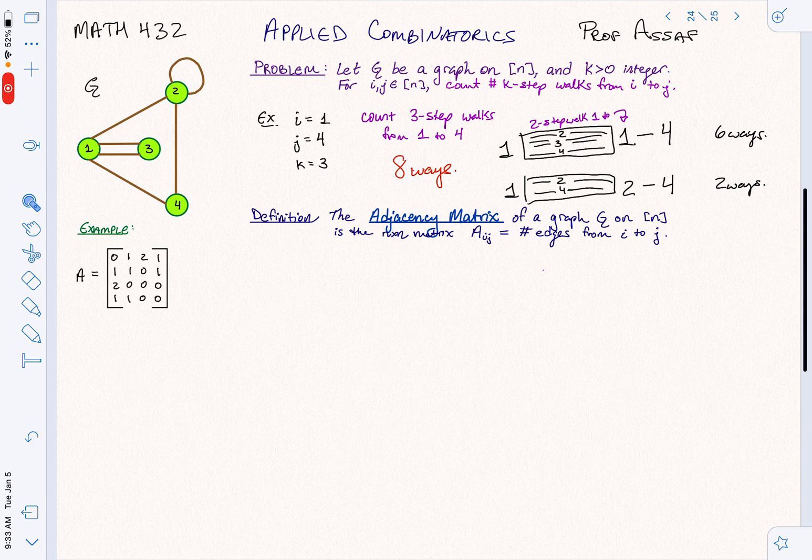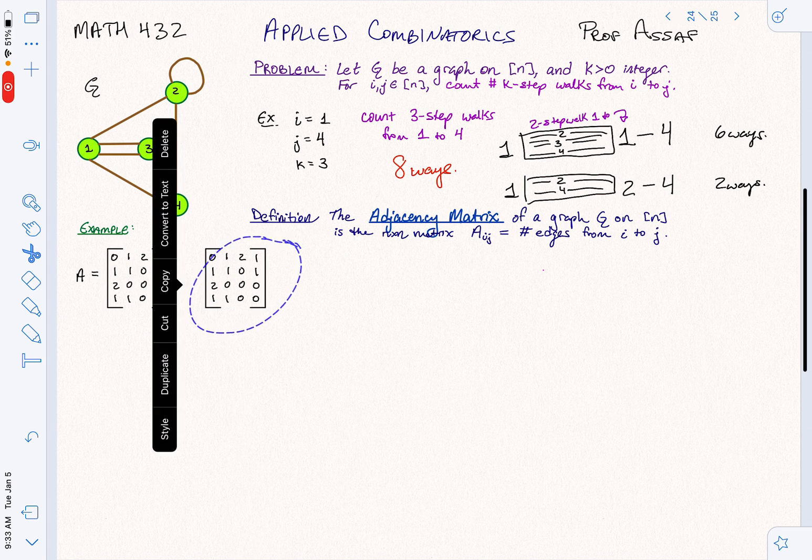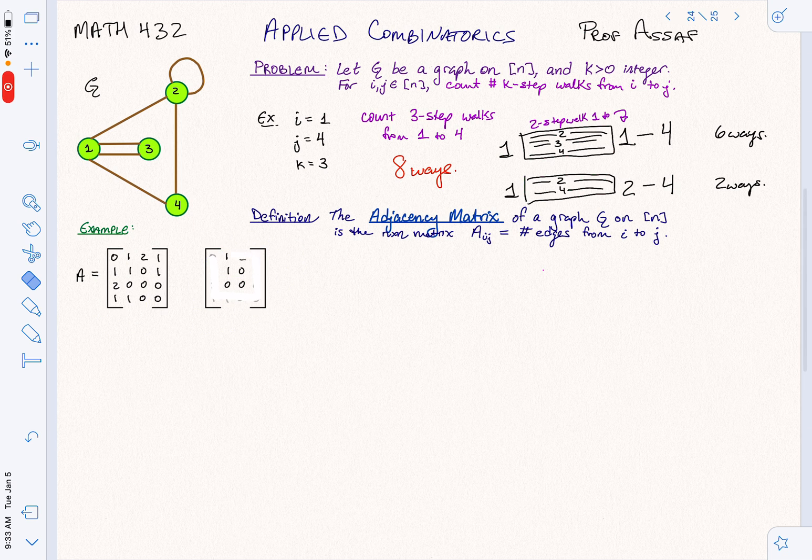So how does the adjacency matrix help us? Well, the adjacency matrix, by definition, tells us one step walks from i to j. So what happens if I square this matrix? So I could think about taking A and duplicating it and squaring it.